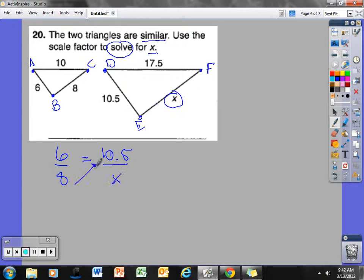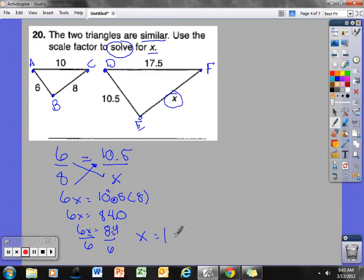We use our cross product. I have 6 times X, which is equal to 8 times 10 and a half. 8 times 10 and a half, there's one decimal place, so really I have 6X being equal to 84. I am solving for X, not 6X's, so I'm going to divide both sides by 6. 6 goes into 8 once with 2 left over. 6 goes into 24, 4 times. I know that X is equal to 14.